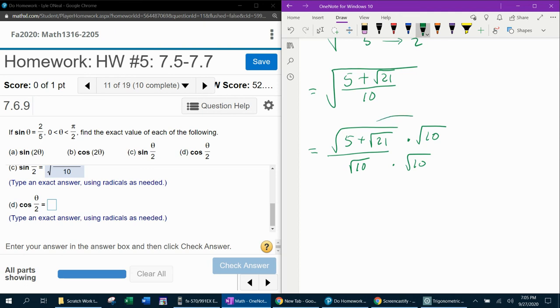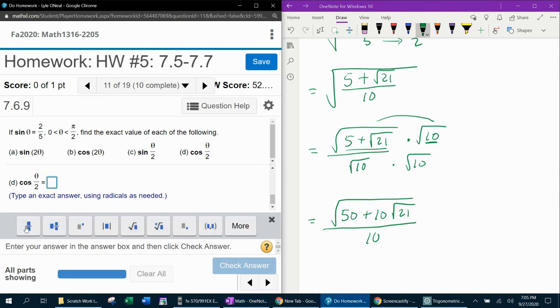And then up top, since we're multiplying a square root times a square root, we can multiply their radicands together. So that would give me the square root of 50. 5 times 10 is 50. Plus 10, square root of 21. Now all over 10, and that would be the denominator rationalized. So that answer should also be acceptable.